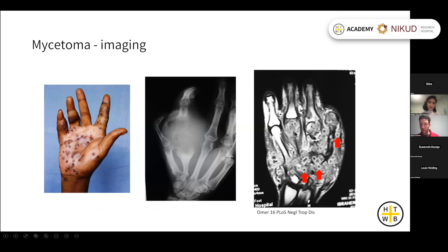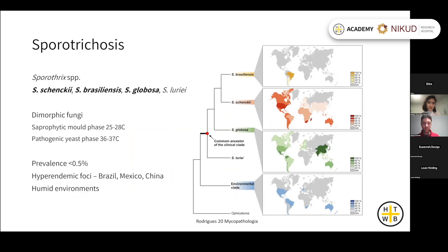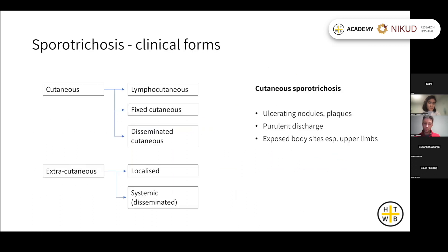Sporotrichosis is caused by Sporothrix species — the main pathogenic species being S. schenckii, S. brasiliensis, and S. globosa — with different geographic distributions. These are dimorphic fungi: in the environment they exist in a mold phase, and at higher temperatures inside the human host they convert to a pathogenic yeast phase. Most sporotrichosis is cutaneous disease; around three-quarters present with a lymphocutaneous form and about a quarter with a fixed cutaneous form.